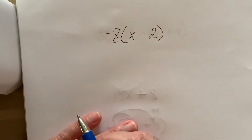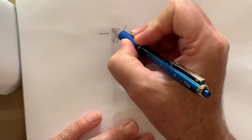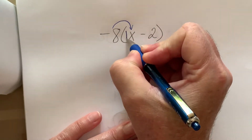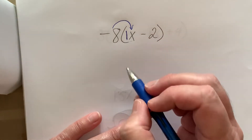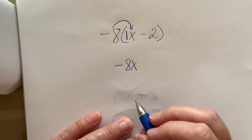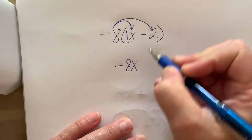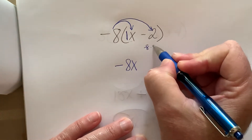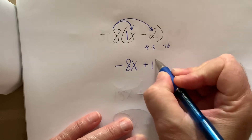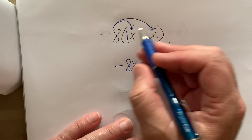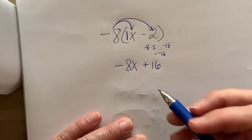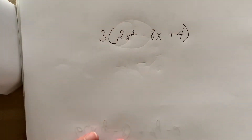Now we have a negative factor: -8(x - 2). It doesn't change anything — we just multiply by everything inside. First, -8 times x: remember there's an understood coefficient of 1 in front of x, so -8 times 1 is -8, giving -8x. Then -8 times -2 is positive 16. Alternatively, you can view it as -8 times 2 = -16, and then the minus sign makes it minus a negative 16, which is also +16. Either way works, but treating the -2 as negative is faster.